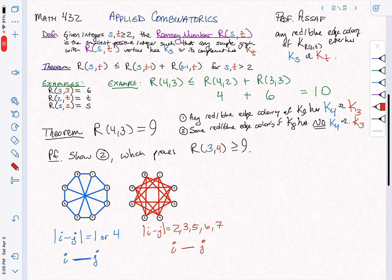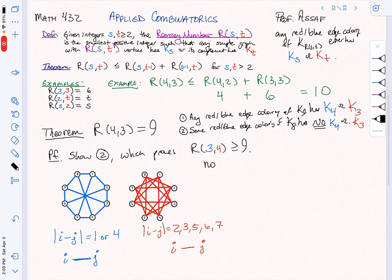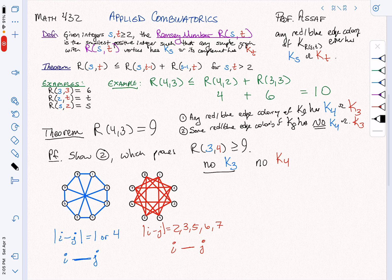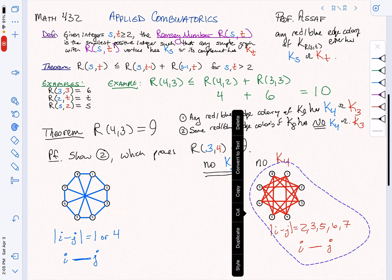So I need to show that there is no K3, and I need to show that there is no K4. So why is there no K3? For this one, maybe we'll move our red guy over. That's really about the K4 statement. So why is there no K3?